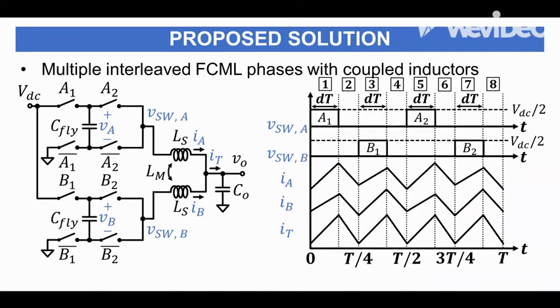We propose the use of multiple interleaved phases with coupled inductors. This has a dual effect of reducing the current ripple and reducing the flying capacitor voltage imbalance.